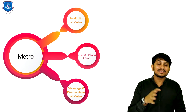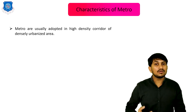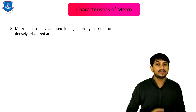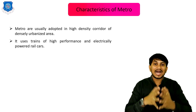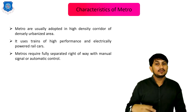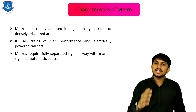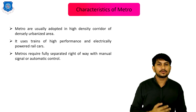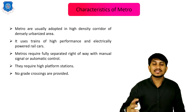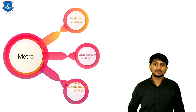The characteristics of Metro are: Metro systems are usually adopted in high-density corridors of densely urbanized areas. They use trains with high-performance, electrically powered rail cars. Metros require a fully separated right-of-way with manual signal or automatic control. They require high-platform stations, and no grade crossings are provided.